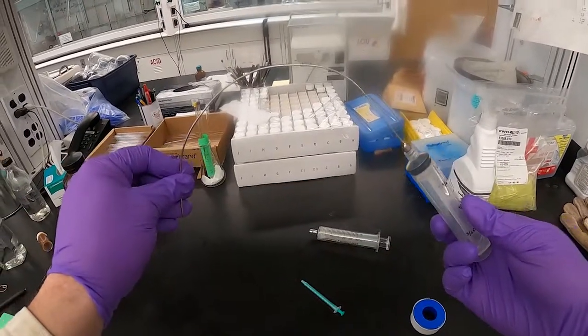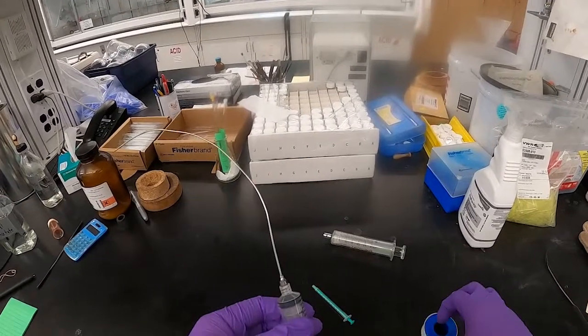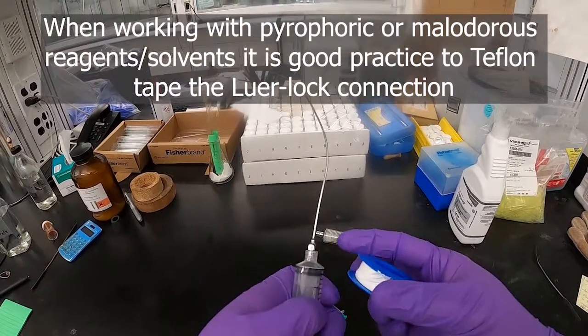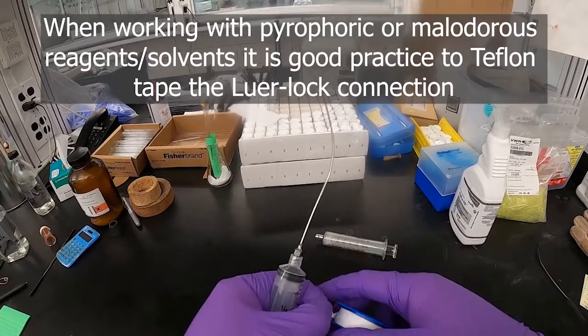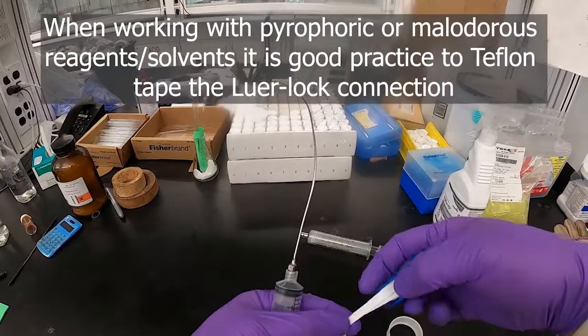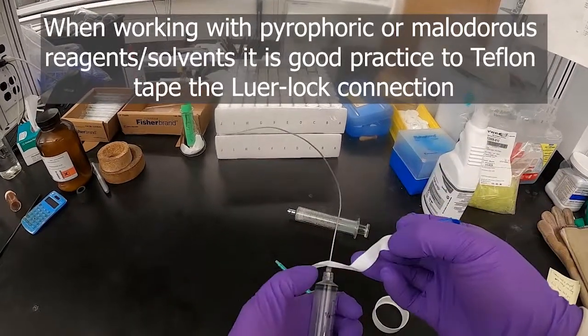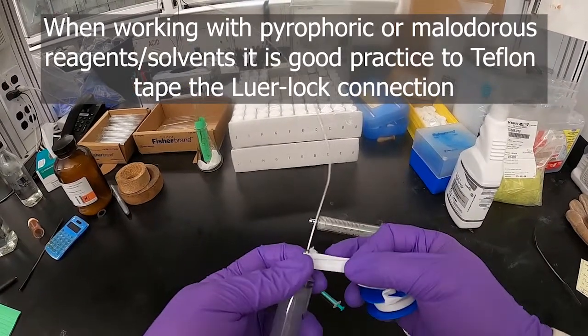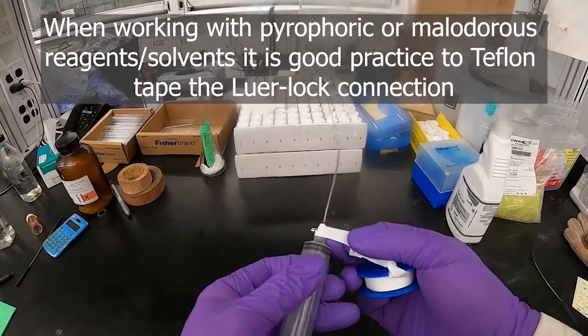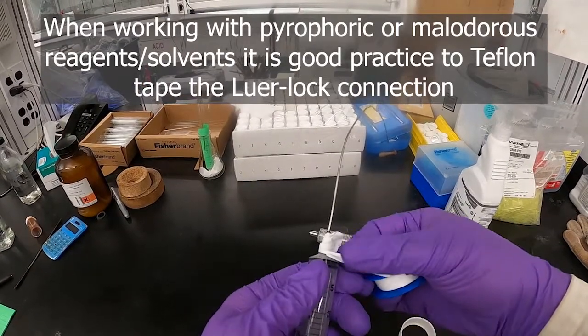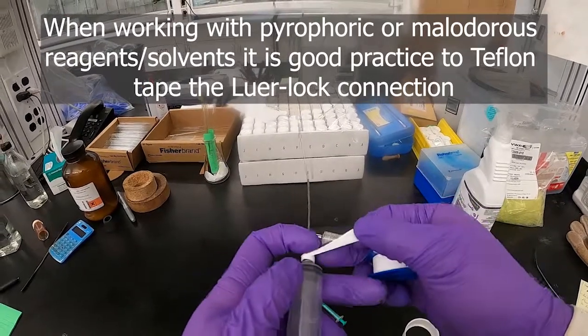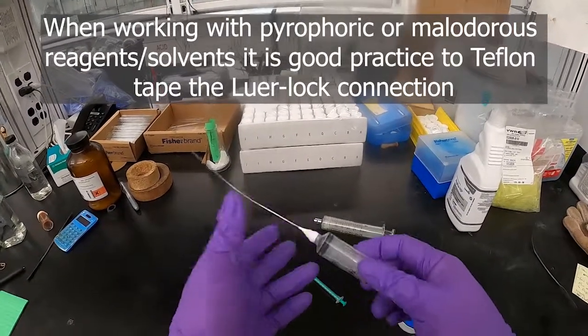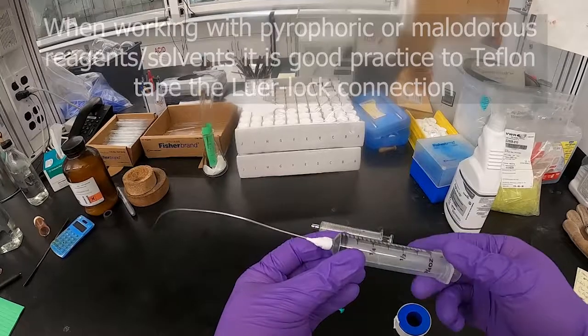If we're syringing compounds that are pyrophoric or air sensitive, or that we just don't want to leak, we can use some Teflon tape around the joint between the lure lock and the needle. This will help it be more secure so that whatever compound we're using doesn't leak. Just wrap some of the tape onto the syringe portion as well as a little bit onto the needle itself.